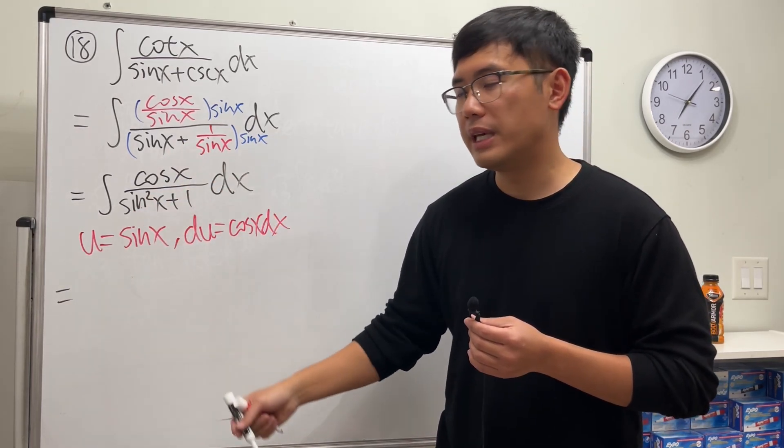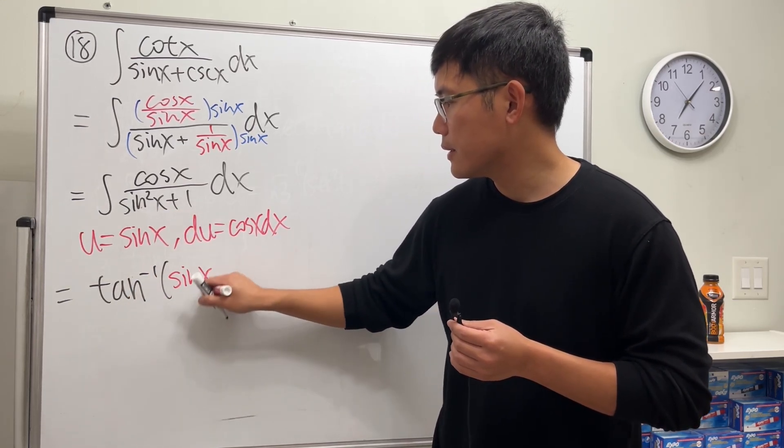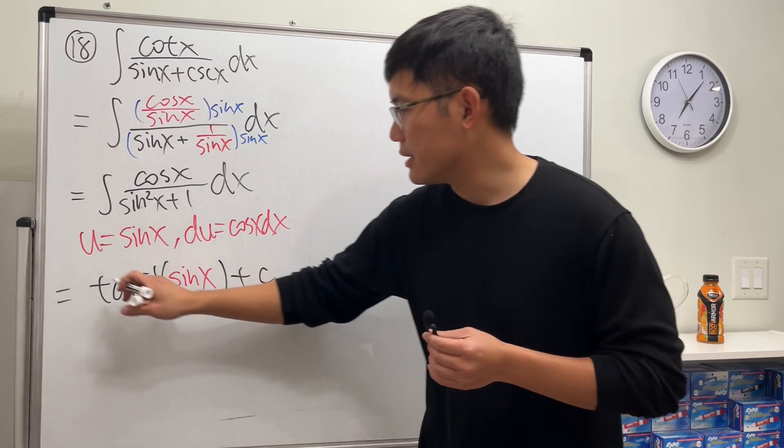So therefore we are integrating 1 over u squared... plus 1 in the u world, so we get inverse tangent of u, and u is sine x. So that's it, well done.